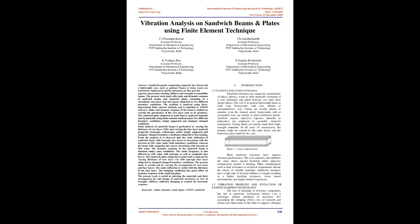1.1 Sandwich Structures In General. Sandwich structures are composite constructions of alloys, plastics, wood, or other materials consisting of a core laminated and glued between two hard outer sheets (skins). The core is in general a lightweight foam or solid core — honeycomb, web core, tubular, or corrugated/truss core.